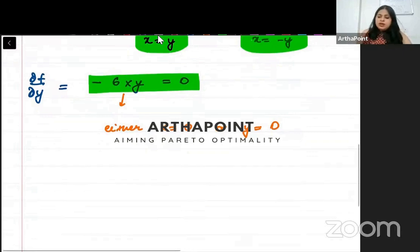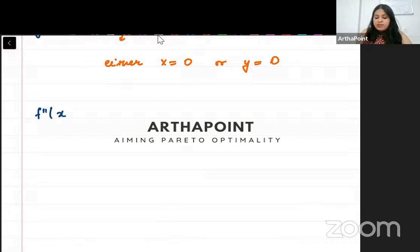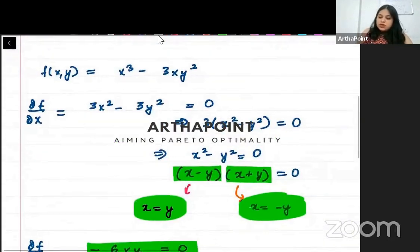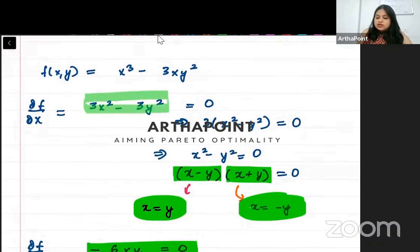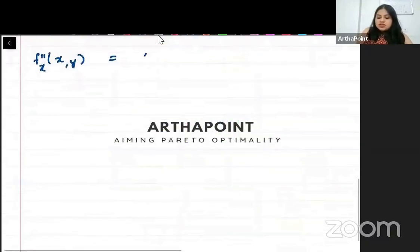Now let us find the double differentiation. f double dash with respect to x - I'm finding the double differentiation of this. If I differentiate this again with respect to x, I will get 6x.